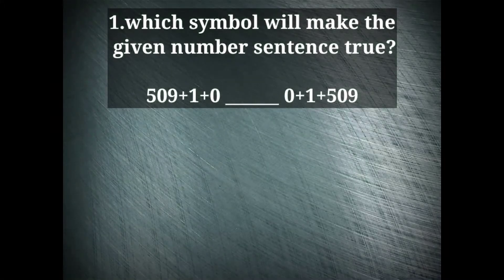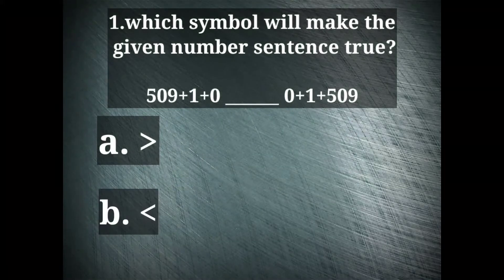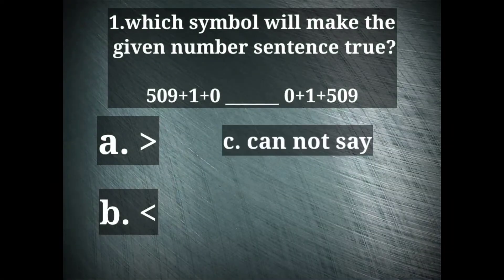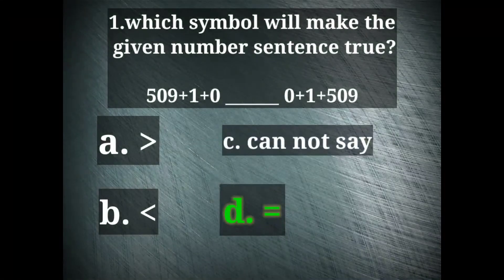Question number one, which symbol will make the given number sentence true? And we have four options here: greater than, less than, cannot say and equal to. Equal to sign will come here. And this one is based on the commutative property of addition.